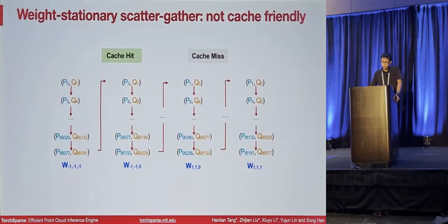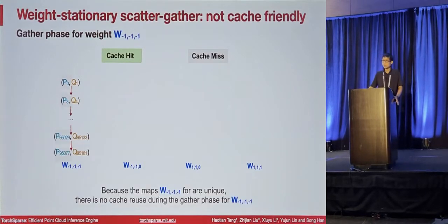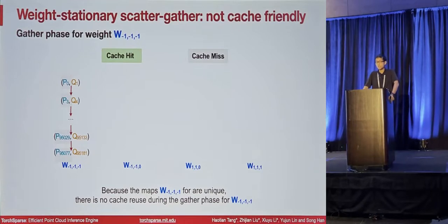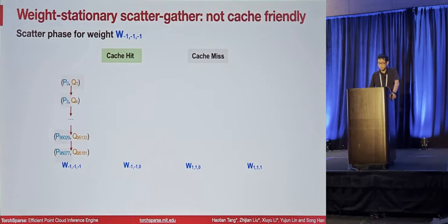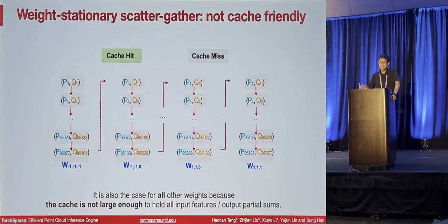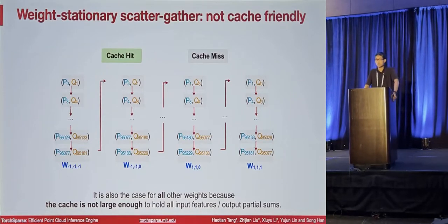On top of that, the weight-stationary scatter-gather pattern is not cache-friendly. Because the map for each weight is unique with no duplicating elements, iterating over the map in the gathering phase means every time you encounter a new input feature — resulting in 0% cache reuse. This is also the case for the scattering phase. What makes things worse is that our maps are very large and the cache is not large enough to store all input features for reuse. The cache miss ratio is almost 100% for this scatter-gather dataflow in weight-stationary order.